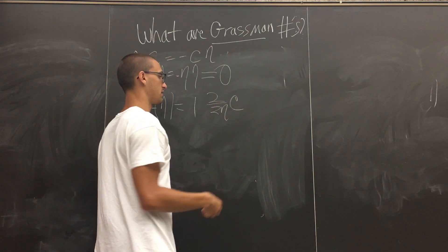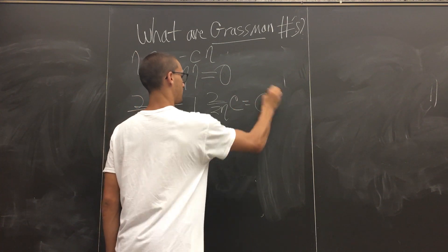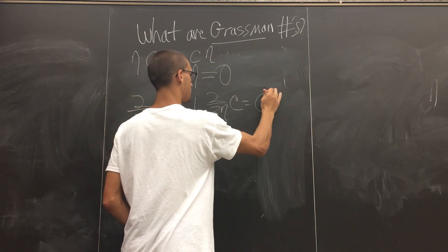And then if we try to take the derivative with respect to the other fermion, or Grassman number, I use zero.